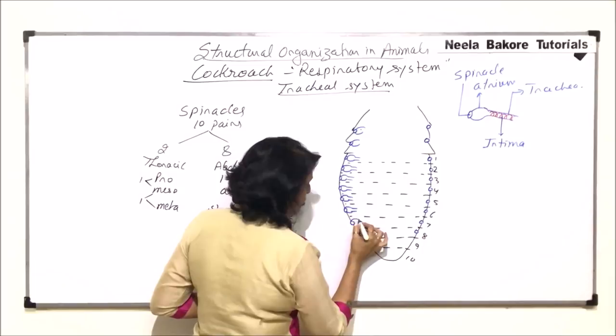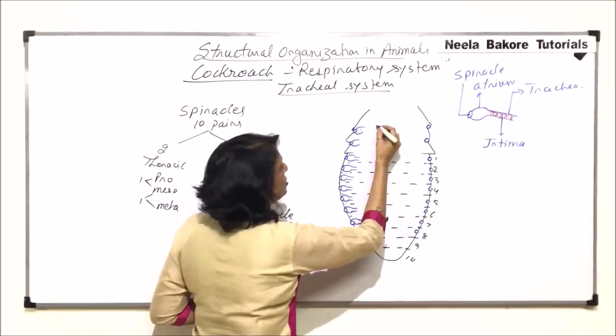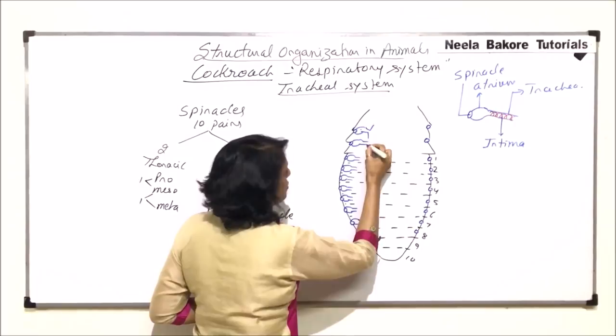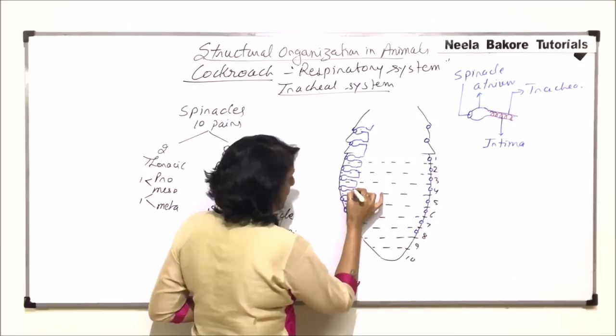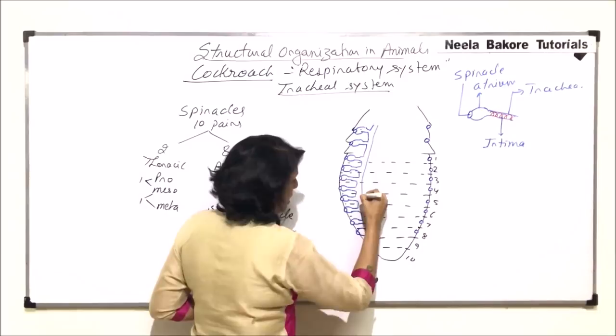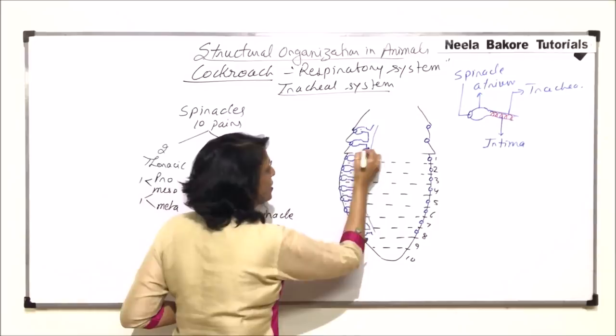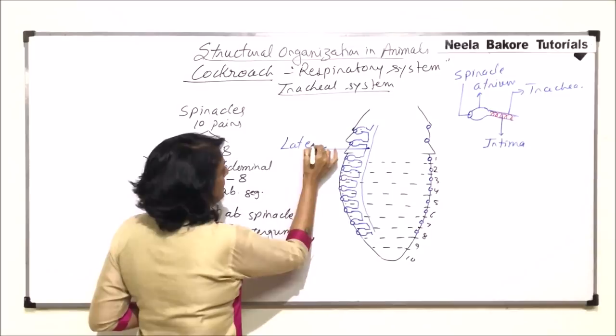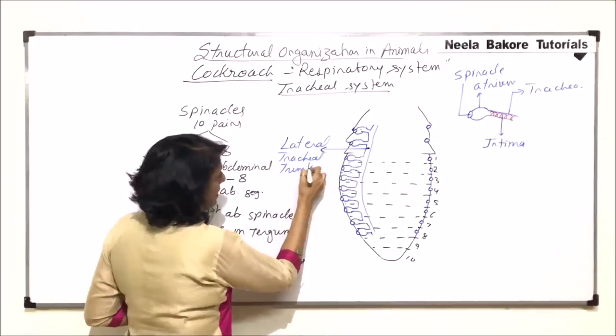These tracheal tubes actually join to form two lateral longitudinal tubes. So all the tracheal tubes have joined to form this lateral tube — also known as the lateral tracheal trunk. There is one on each side, making a pair of lateral tracheal trunks.